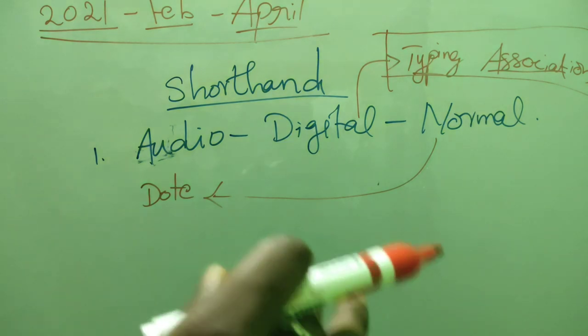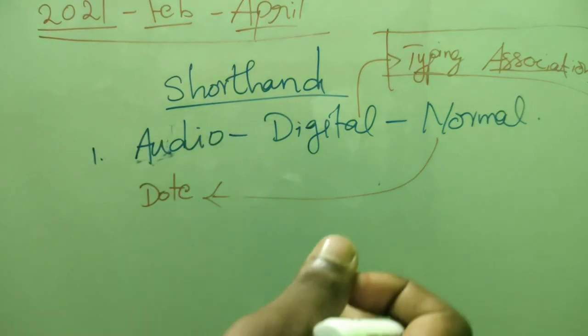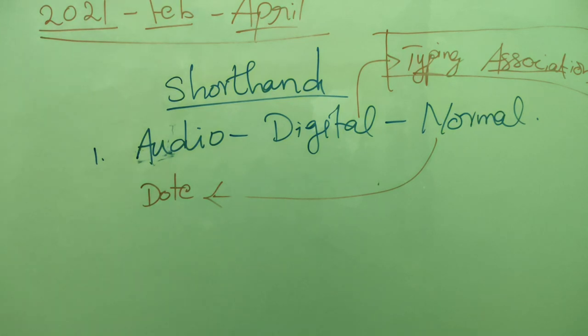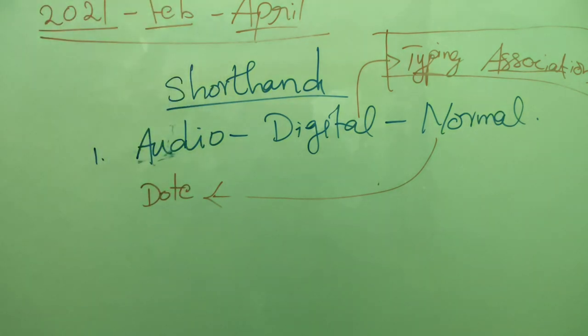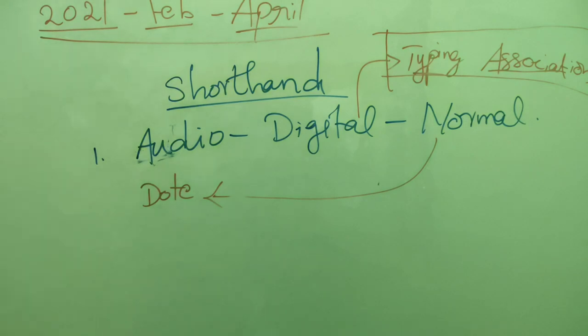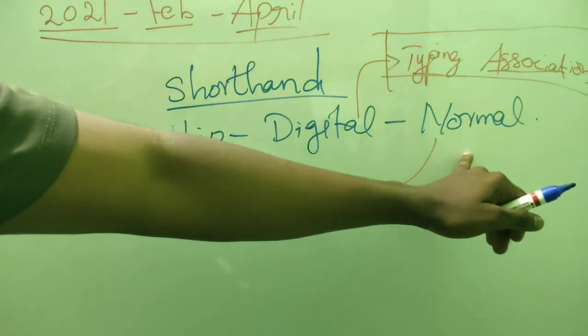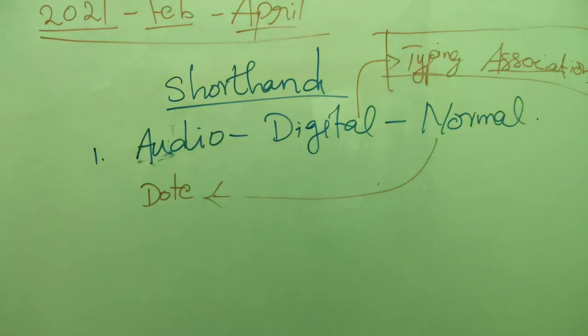There is a change in the center code. This is the short end examination. This is the normal method — one teacher is the same.